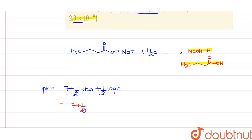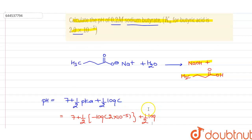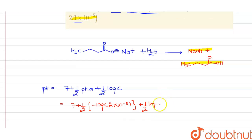So it will be 7 plus half. It will be minus log. The value of Ka is given, that is 2 multiply 10 to the power minus 5, and here it will be 1 by 2 log. The value of concentration is given, that is 0.2.